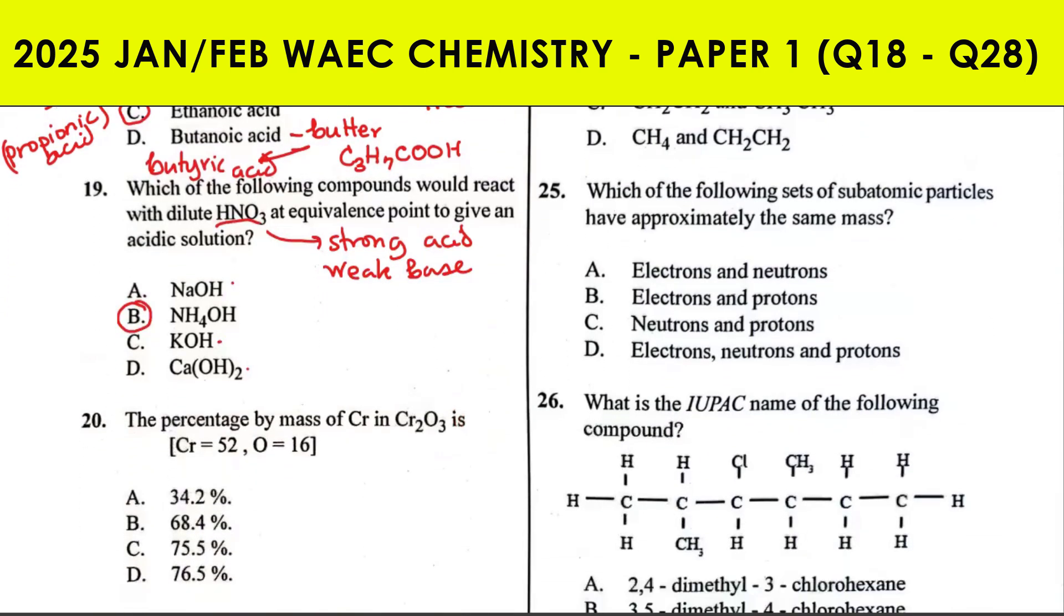Question 20: the percentage by mass of chromium in Cr₂O₃ is what? How you calculate percentage by mass of an element in a compound: percentage mass would be the total mass of the element - that's 2 atoms of chromium - over the molar mass of the compound times 100.